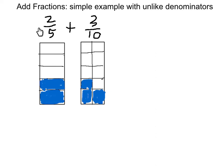Suppose I want to add the fractions 2 fifths and the fraction 3 tenths. The picture on the left represents 2 fifths because I have 1, 2 pieces out of a total of 5 shaded in, and on the right I have 1, 2, 3 pieces out of a total of 10.